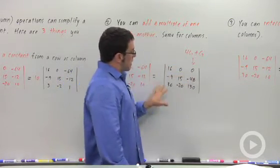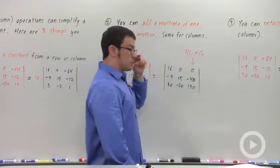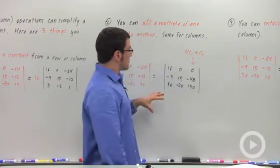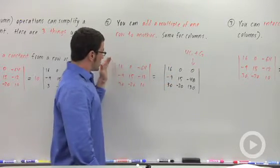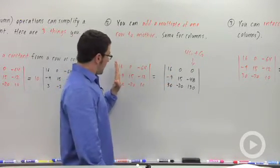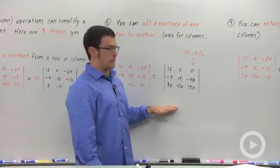Now, what's interesting about this row operation, it's a column operation in this case, is that it doesn't change the value of the determinant. You can always add a multiple of a row to another row or a multiple of a column to another column and it doesn't change the value.